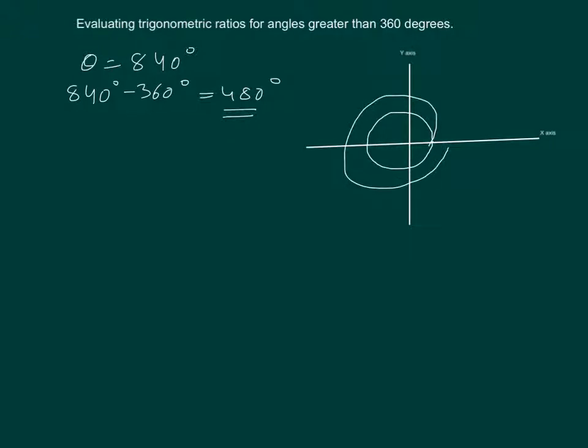Now we want to see where will the terminal side of the angle land up. For that we need to again subtract 360 degrees from it and we are left with 120 degrees. That means the terminal ray of this angle is going to land up in the second quadrant.